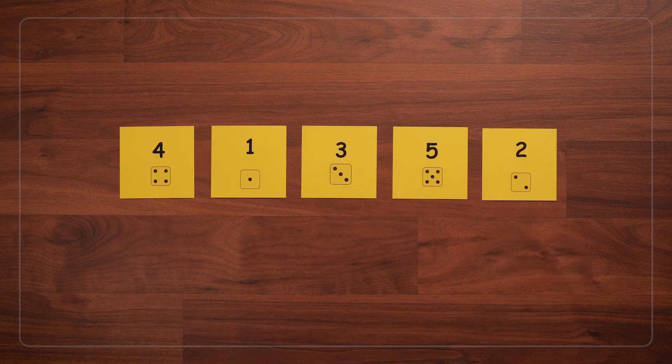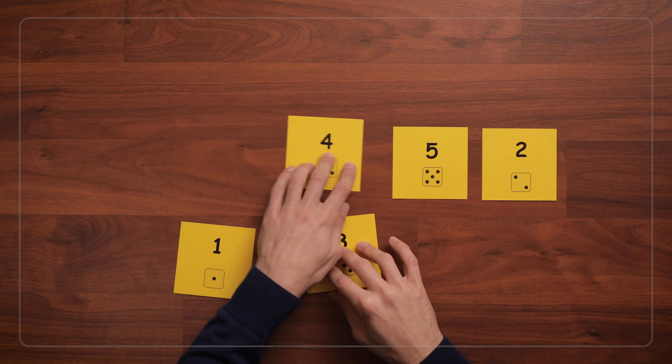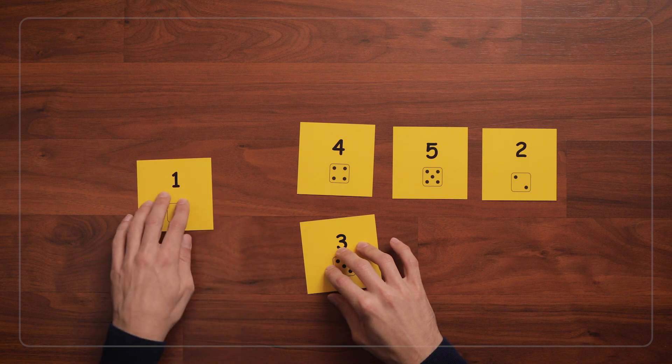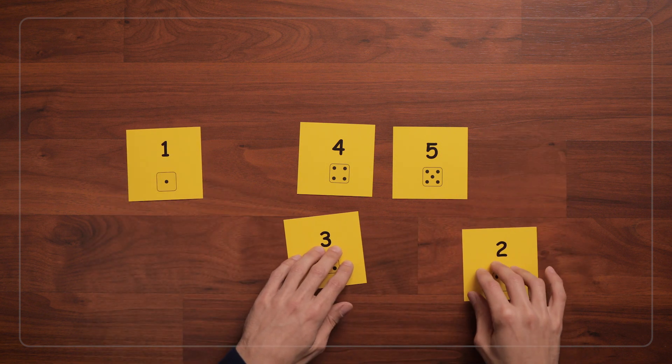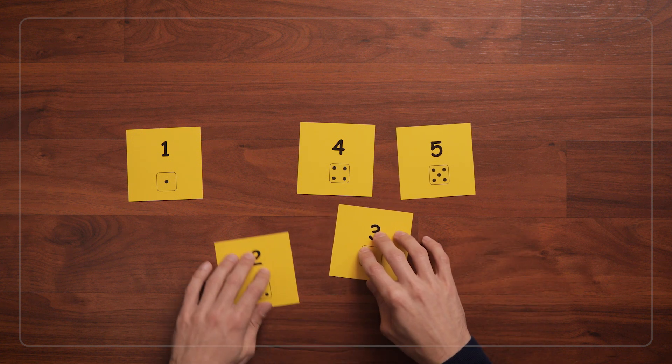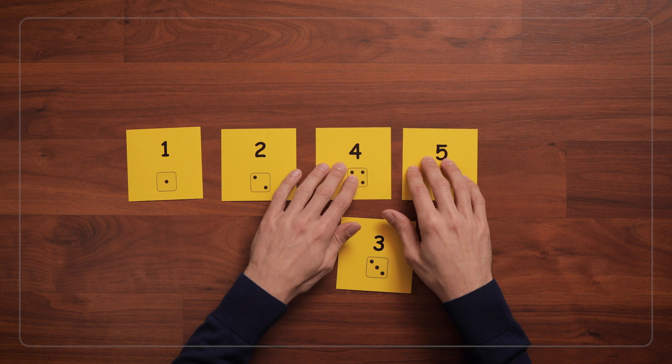See what you can notice while they do this. Do they lay out the cards from left to right? Do they start with one? Are they more focused on the numbers or the dots? Are they counting the dots, or can they recognize the quantities without counting? Do they know to leave space for the 3 card between the 2 and the 4?